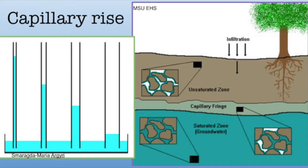The capillary fringe is where water from the water table is pulled up through interconnected pore spaces. The capillary rise is the upward movement of water. In narrow tubes, the height of capillary rise is greater than in wider tubes. This can help plants to get more water if their roots are close to the water table.